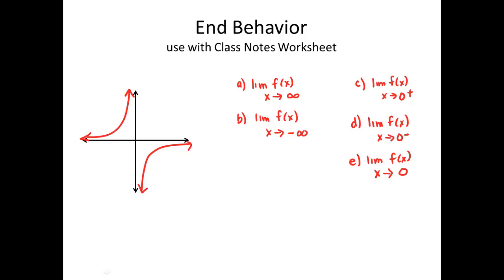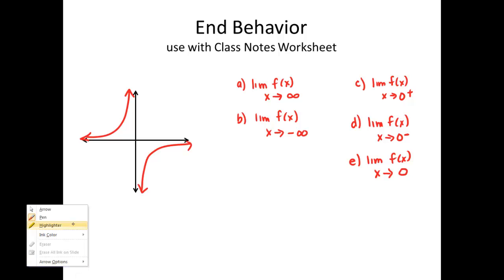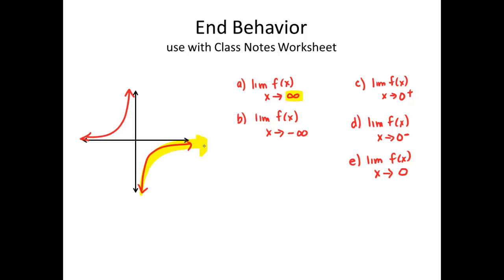Our first one. End behavior is looking at the ends of our graphs. The ends of our graphs refer to going as far to the right and as far to the left as possible — not up and down, but what happens as we travel left and right. If I trace this heading towards positive infinity, my graph levels off; it actually approaches an asymptote. The same thing on the left side going towards negative infinity — it also levels off. In this case, the graph levels off at zero in both directions.